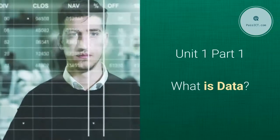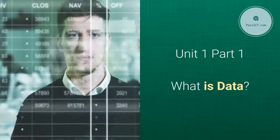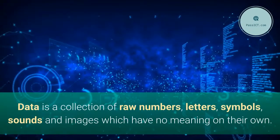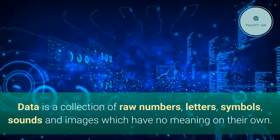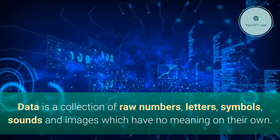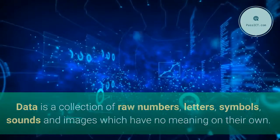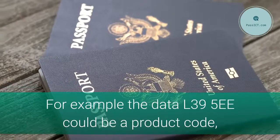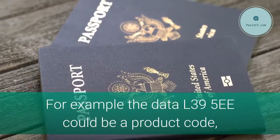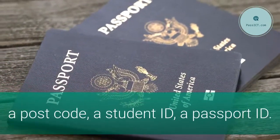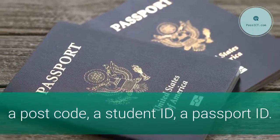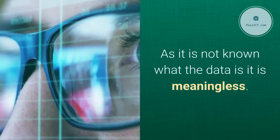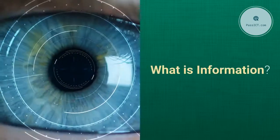Unit 1, Part 1: What is data? Data is a collection of raw numbers, letters, symbols, sounds and images which have no meaning on their own. For example, the data 'L39 5E' could be a product code, a postcode, a student ID, or a passport ID. As it is not known what the data is, it is meaningless.